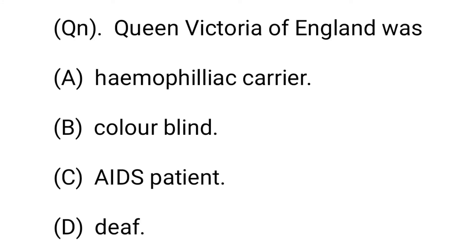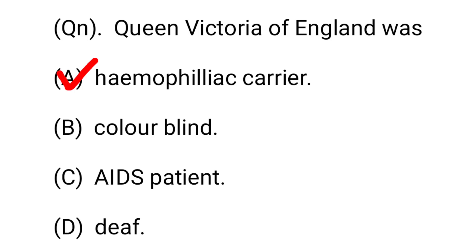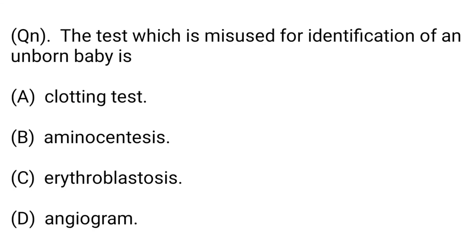Next question: Queen Victoria of England was: Option A: hemophilia carrier. Option B: colorblind. Option C: an ABO patient. Option D: deaf. Queen Victoria and many of her descendants carried what was once called the 'royal disease,' now known as hemophilia — a blood clotting disorder caused by a mutation on the X chromosome. So option A, hemophilia carrier, is the right answer.